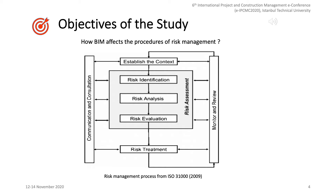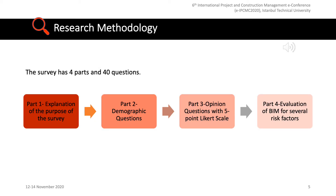The survey was responded to by 65 experts. Exploratory research on the utilization of BIM for risk management started with an overview of the literature on risk management and BIM. Consequently, a questionnaire form was designed and conducted. The survey has 4 parts and 40 questions. The first part of the questionnaire explains the purpose of the survey. In the second part, demographic questions are asked in order to understand the experience of respondents in the industry.